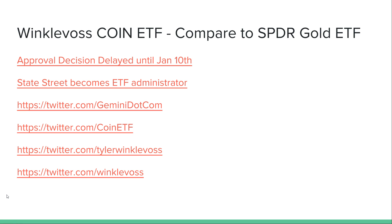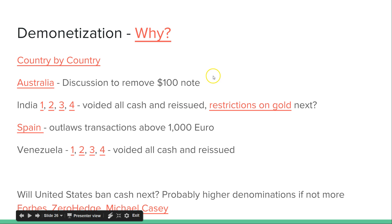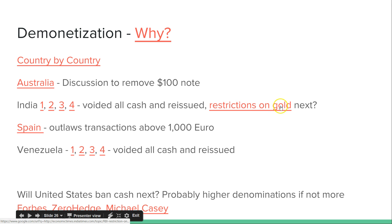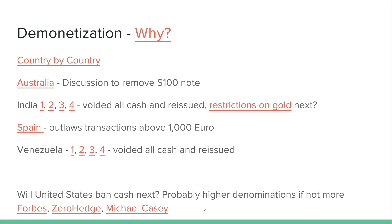Demonetization has been happening worldwide. Governments are generally using it to decrease corruption, child trafficking, and basically prevent bad actors from using cash. Australia is recently discussing removing the $100 note. India had a big deal that everybody should be aware of, possibly on gold as well. Spain just outlawed cash transactions over €1,000. And Venezuela, just like India, has done a lot of voiding and reissuing. The question becomes whether the United States will follow suit — I think they will with the higher denominations, like the $1,000 bill. In the U.S. I don't know if we'll go as far as the $100 bill.